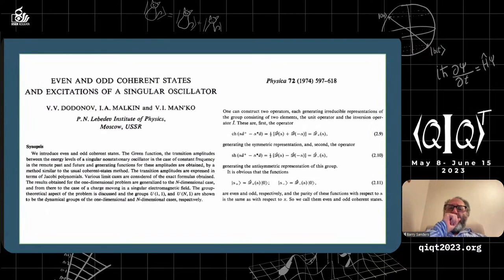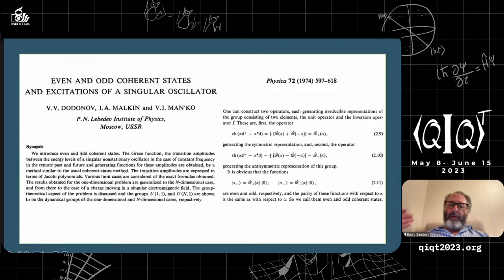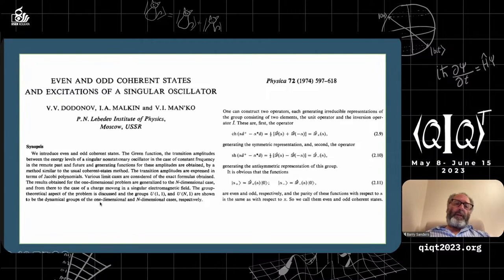This slide covers an early case of the Schrödinger cat state that probably doesn't get enough attention. It came out of Russia in 1974 and introduces even and odd coherent states. Think of it as the Schrödinger cat in a superposition of alive and dead — it could be live-state plus dead-state, or live-state minus dead-state. So this paper is really describing superpositions with a plus or minus phase relation.